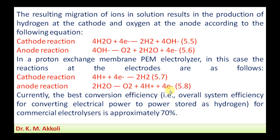Currently, the best conversion efficiency for electrolysis is the overall system efficiency for converting electrical power to power stored as hydrogen. For commercial electrolyzers, this conversion efficiency is approximately 70 percent, which is a good efficiency. For this reason, we can use the electrolysis process for production of hydrogen, which can be used as industrial fuel or for other industrial applications.